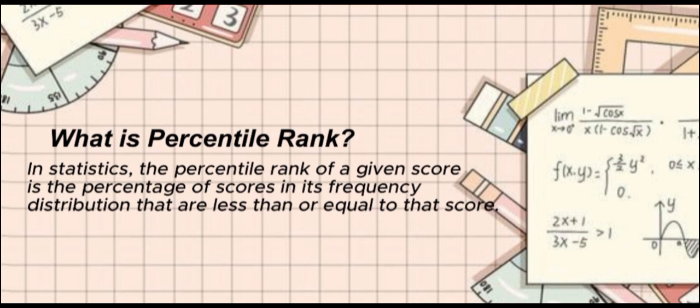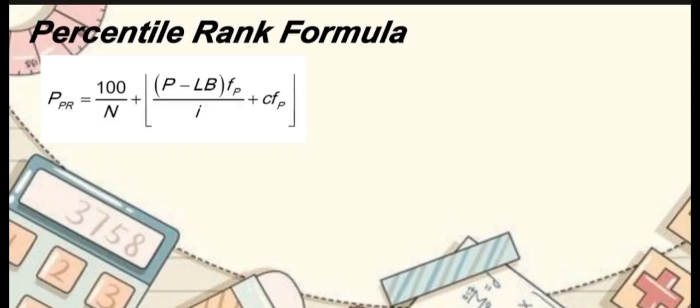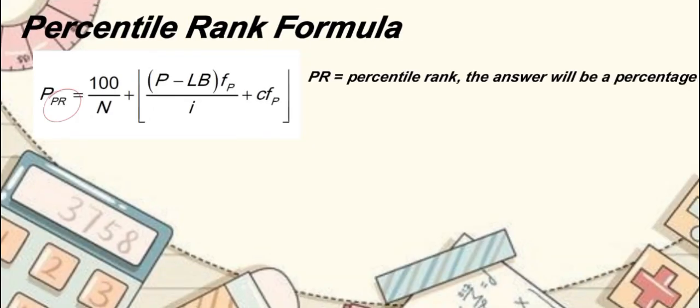From the word percentiles, percent rate is involved. There is a percentile rank formula where PR is the percentile rank, the answer will be a percentage, and N is the total frequency.